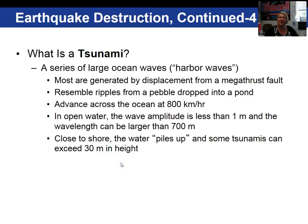Most of us have become quite aware of tsunamis. These are a series of large ocean waves produced generally when a large earthquake occurs, though it doesn't have to be an earthquake. They can travel across the open ocean at 800 kilometers per hour but are only a meter high with wavelengths larger than 700 meters. When the wave gets nearer to shore and starts dragging on the ocean floor, the water piles up and can exceed 30 meters in height, though the velocity of the wave does decrease at that point.